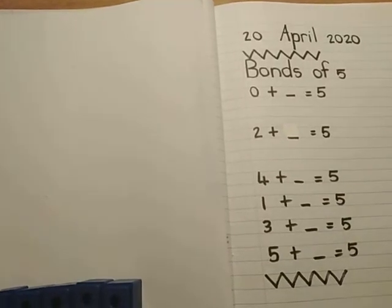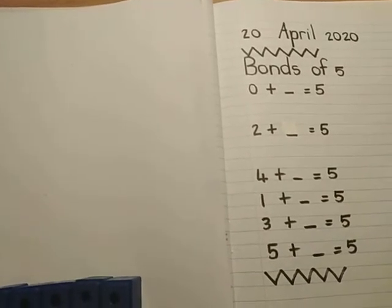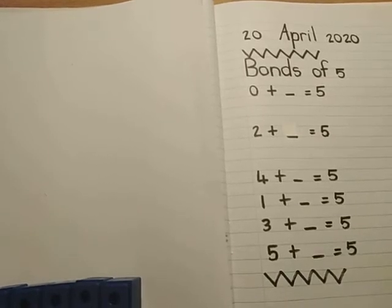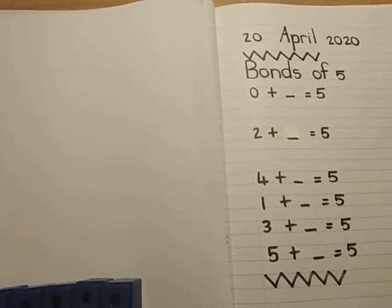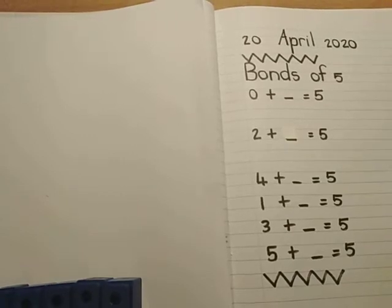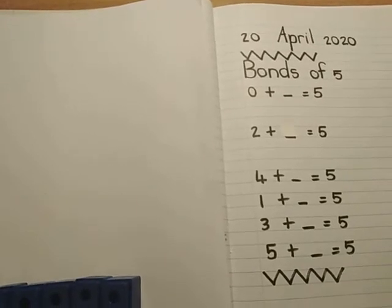Today we're going to talk about bonds of five again. Now bonds just means that there are two numbers that we used and they are friends and they help to make the number that we're looking for.